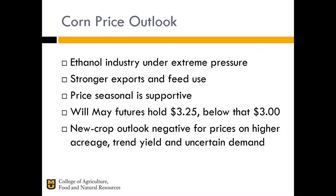To sum up corn: the ethanol industry is clearly under a lot of pressure and is one of the key drivers in the corn market. On the positive side, we are seeing stronger exports and feed use. Seasonally the price seasonal is a little bit positive for corn. Technically, the key question is whether the May contract can hold $3.25 and then $3.00 below that. The new crop outlook appears fairly negative unless acreage comes in well below what the prospective plantings report suggests, and anything close to a trend yield means a pretty big ending stocks increase next year. Prices have come down a long way and could come down further.